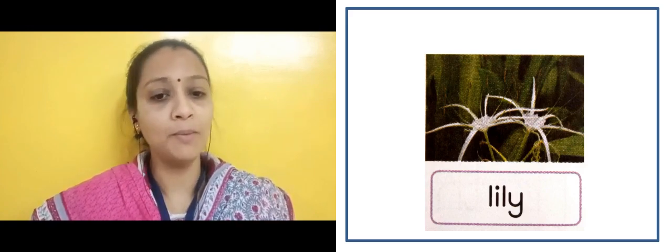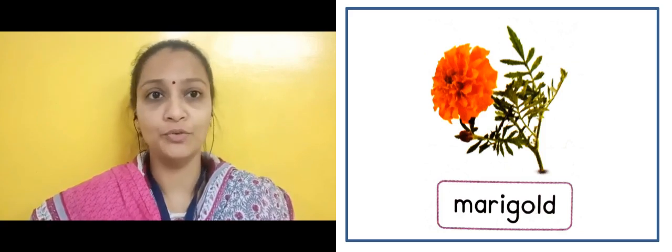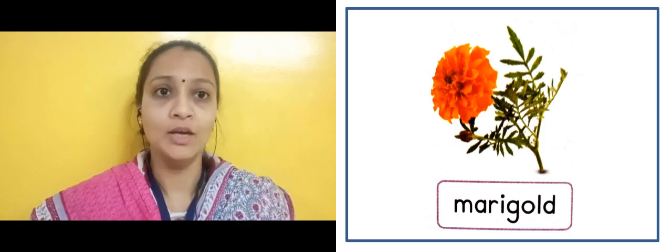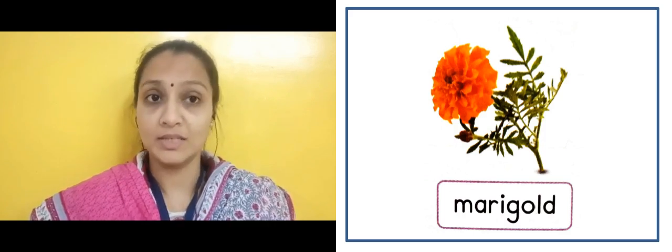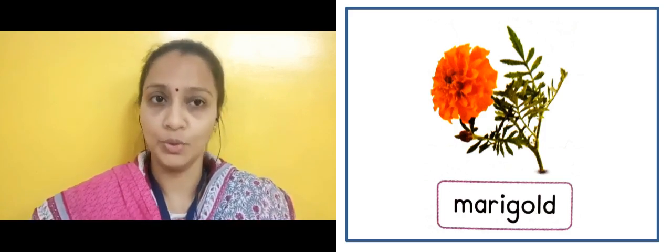Here there is an image of a Marigold — M-A-R-I-G-O-L-D. Marigold is also called Gendha. The Gendha flower comes in yellow and orange colors, and also in brown shades. So this is known as Marigold. Garlands are made from it and it is used in decorations.